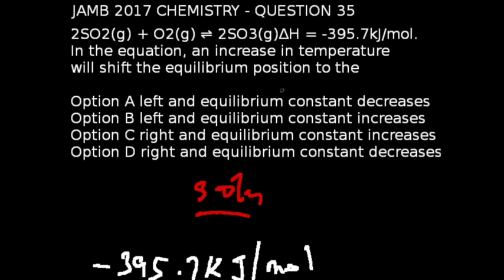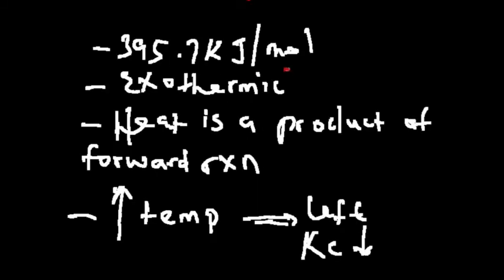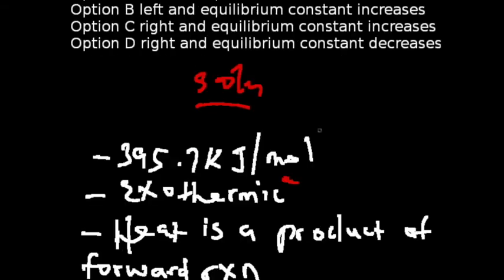Question 35 of the JAMB 2017 chemistry exams is what we're looking at. In the equation above, an increase in temperature will shift the equilibrium position today. We're given the four options in this equation. I just want us to look at this information. We have minus 395.7 kilojoules per mole of heat change. This is telling us that the reaction above is exothermic.